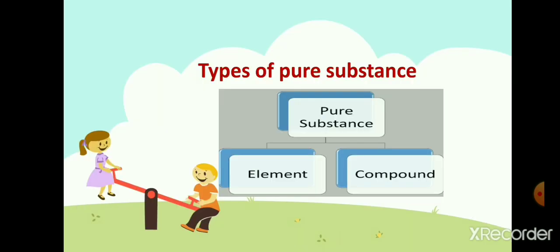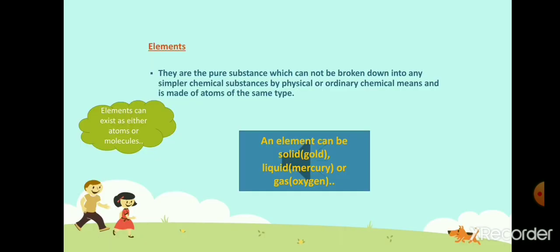These pure substances can be classified as element and compound. Elements are pure substances which cannot be broken down into simpler chemical substances by any physical or ordinary chemical means. That means elements are made up of atoms of the same type. For example, carbon, oxygen, and nitrogen — they are all elements. An element can be a solid, liquid, or gas. For example, gold and silver are solid, mercury is a liquid, and hydrogen and oxygen are gases.